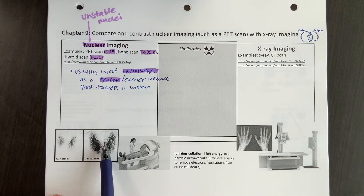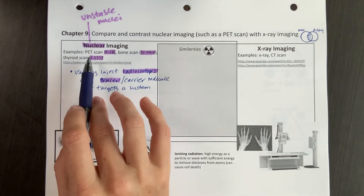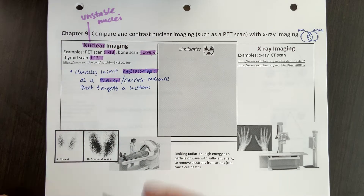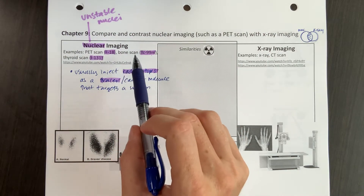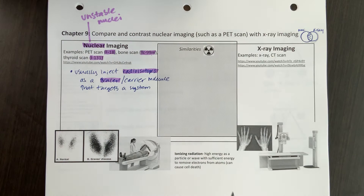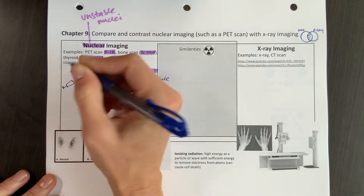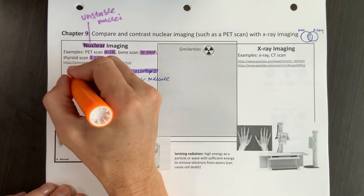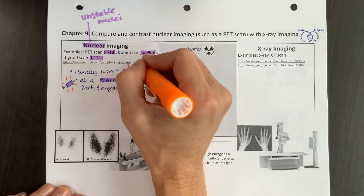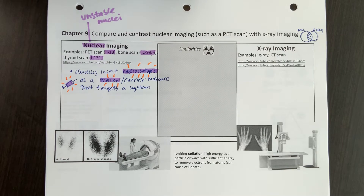For example, if we want to image the thyroid, we inject iodine — a chemical the thyroid naturally picks up — since most of the iodine in our bodies is found in the thyroid. If we want to target the bones, we attach technetium to phosphorus, because there's a lot of phosphorus in our bones. So we inject that radioisotope or tracer.